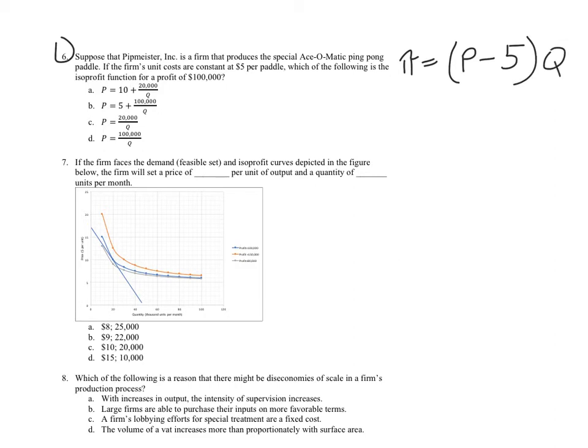An isoprofit function is a function in the price quantity space, and we see some things that are promising, we've got a price and a quantity, and we know we're going for a function in that space, but what do we do about this third variable? Well, these are isoprofits, profits are constant at $100,000, so the profit function for $100,000 will be 100,000 equals p minus 5 times q.